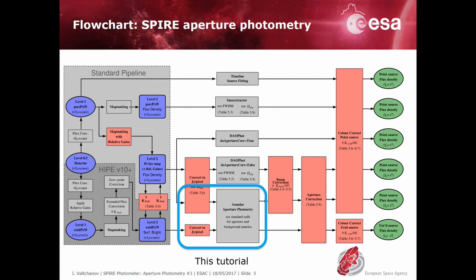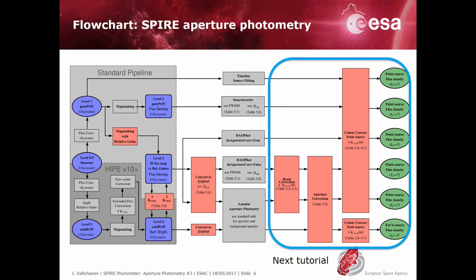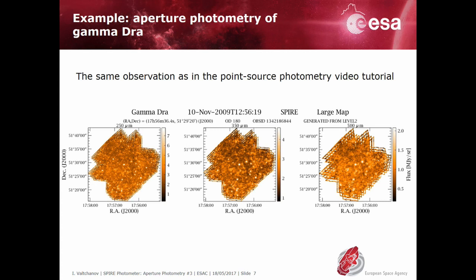In this tutorial we are going to cover annular aperture photometry performed on maps converted to units of Jansky per pixel, as indicated by the blue shape on the flow chart for SPIRE photometry. Another tutorial on SPIRE photometry color corrections will cover all the further steps required after measuring the flux in a user-provided aperture, indicated by the blue area on the flow chart. In the following example we are going to perform aperture photometry on Gamma Draconis, the star used in the tutorial on SPIRE photometry.